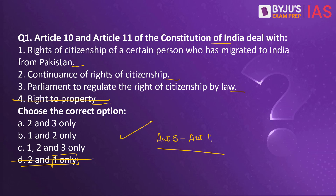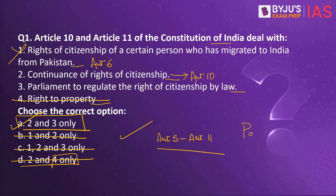Article 6 of the Indian Constitution deals with the citizenship of those who migrated from Pakistan to India, so statement 1 becomes incorrect — allowing you to eliminate options B and C. Article 10 addresses the continuance of citizenship rights for every person who is or is deemed to be an Indian citizen under any provision of Part 2. Article 11 gives powers to Parliament to regulate the right of citizenship by law. So the right answer is 2 and 3, which is option A.